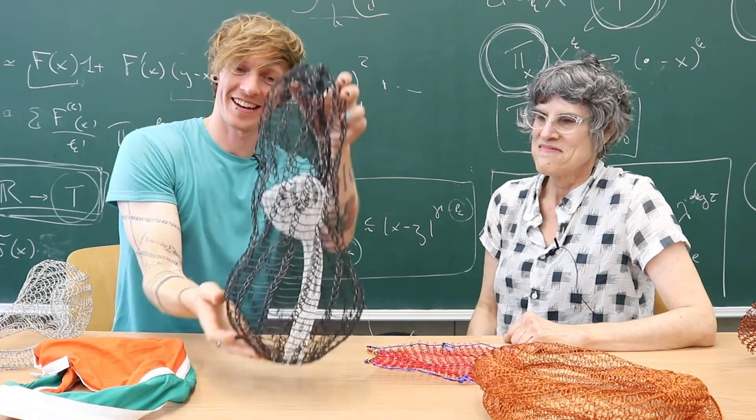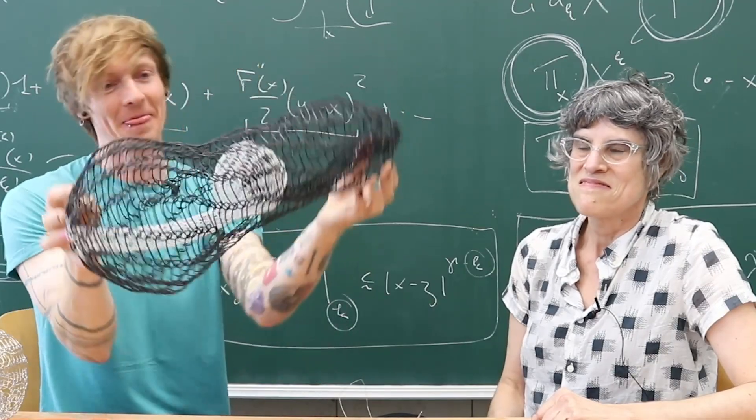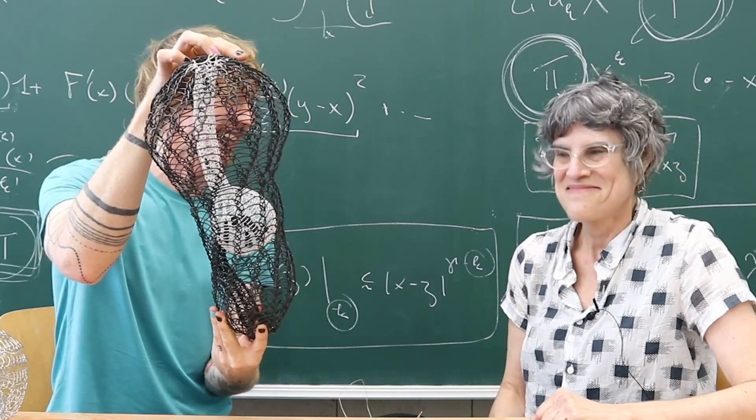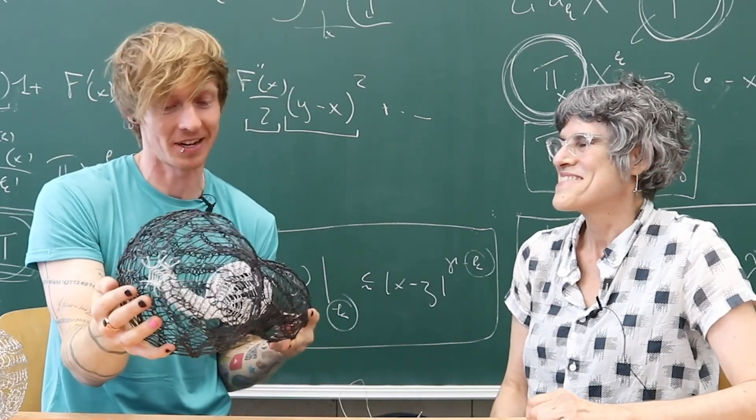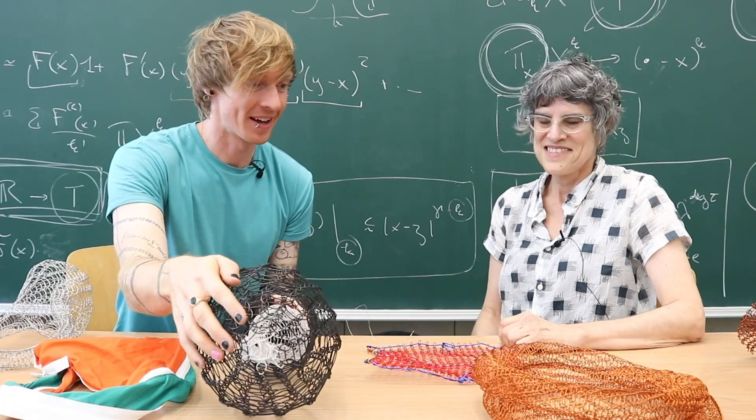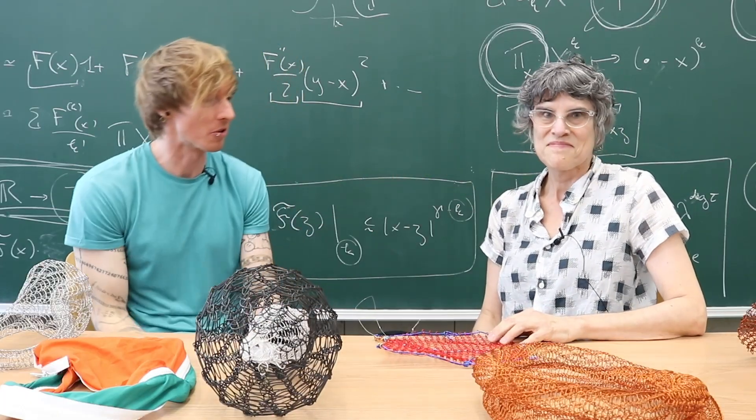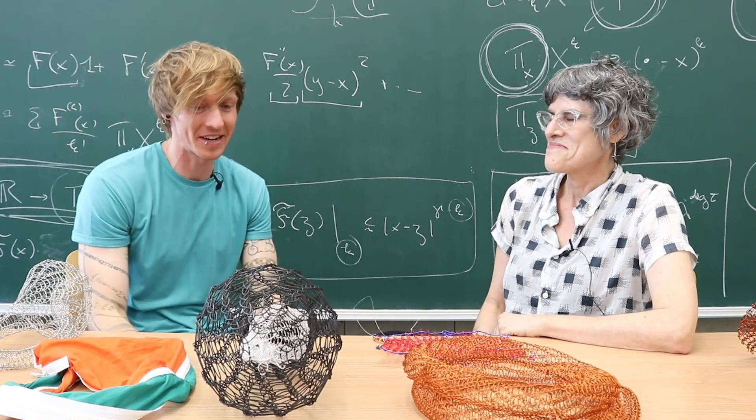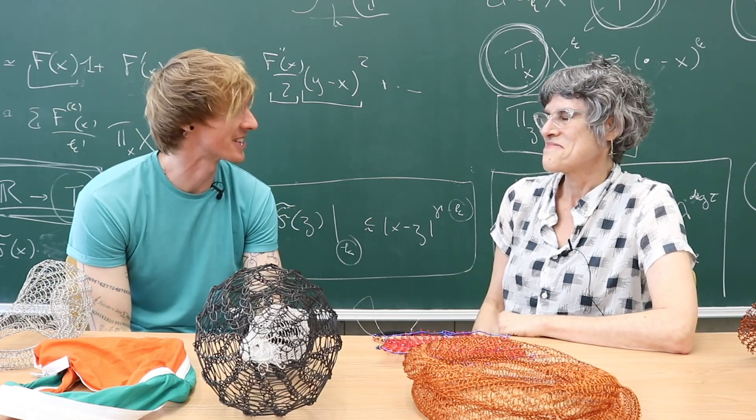This one, there is something Klein bottle-esque happening. I want to say it's a double Klein bottle. And then those two, they look awesome, but I have no clue. So please enlighten me. What are all of these brilliant shapes?